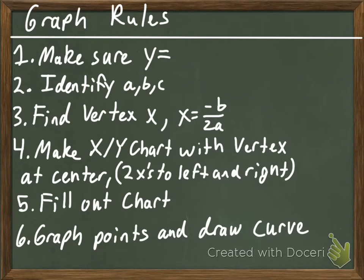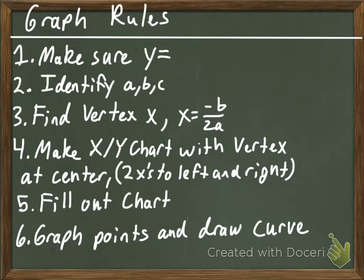Our graphing rules: number one, make sure it says y equals. We need to identify our a, b, and c. Then find the vertex, and the x part of that - x equals the opposite of b over 2a. Then we need to make the xy chart with our vertex in the middle at the center. We're going to pick two x's to the left and two x's to the right. We fill out our chart using substitution, then graph our points and draw our curve.